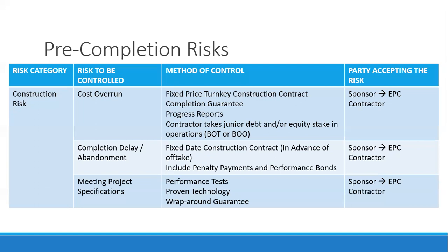To control cost overrun, you contract a fixed-price turnkey construction contract. Because it is fixed price, there is very limited cost overrun risk — you pass that risk to the EPC contractor. You tell the EPC contractor the plant costs 10 billion pesos. If they save money, that's their gain. The risk of cost overrun and the reward of cost savings are both transferred from the sponsor to the EPC contractor.